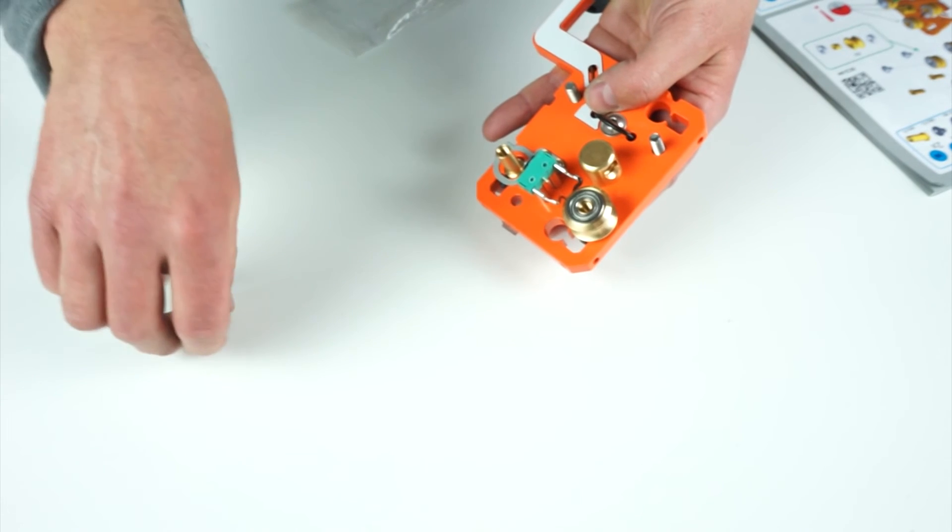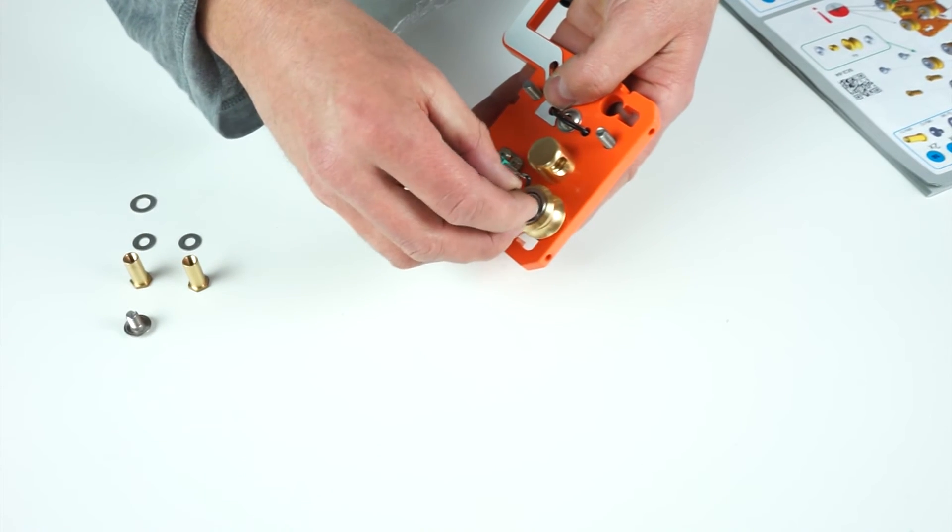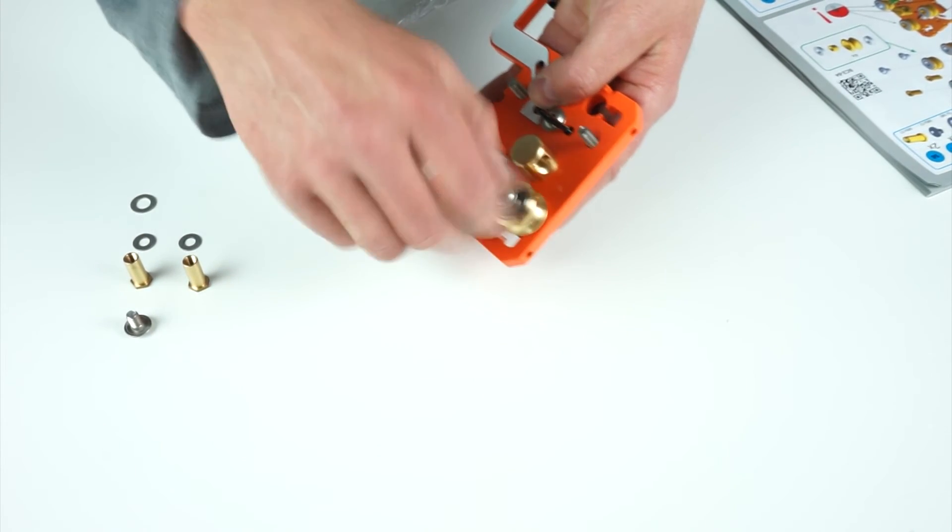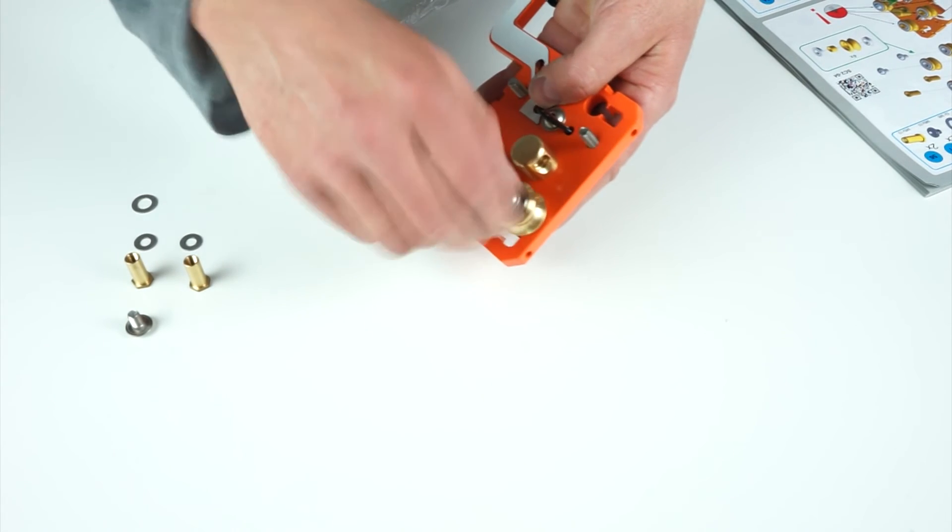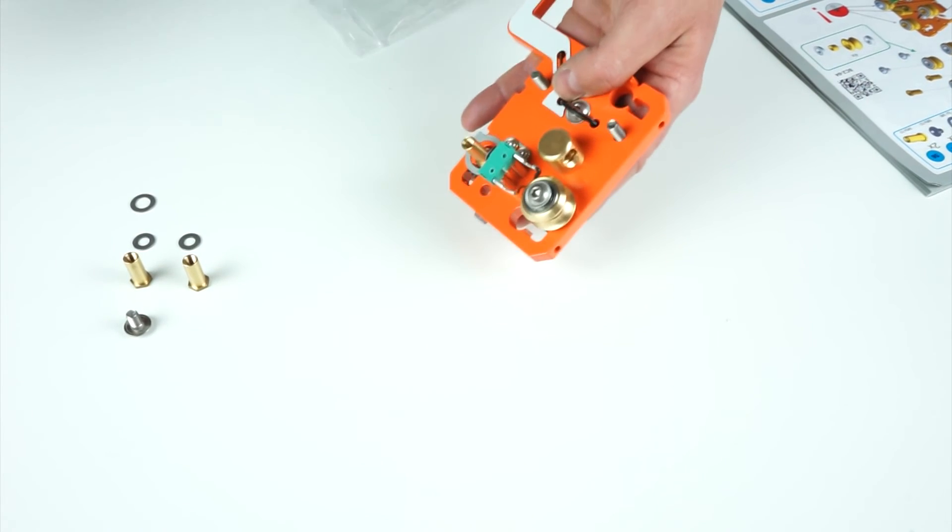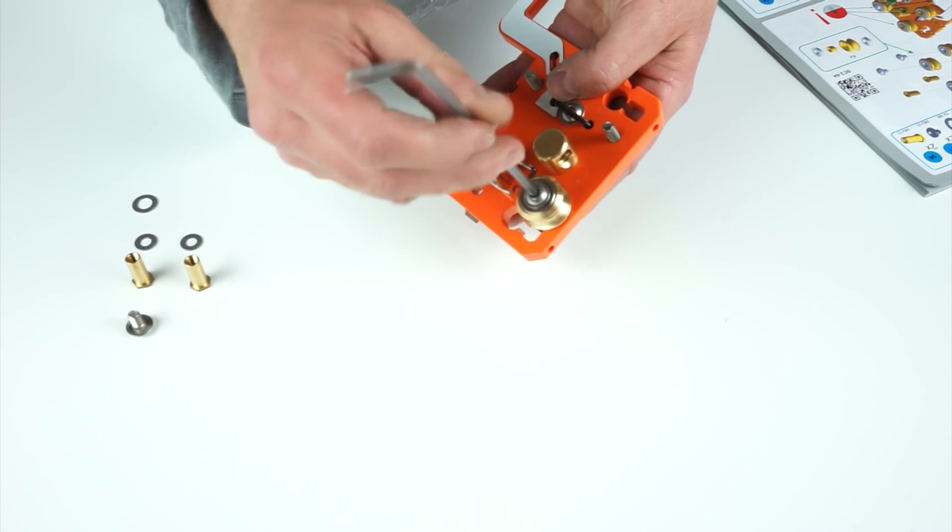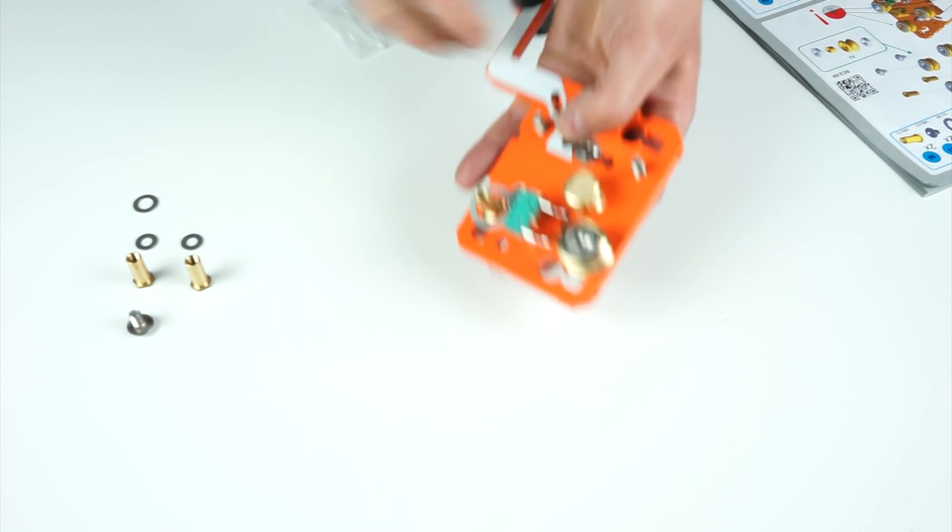The M6 screw is attached last. Be sure to use an L-shaped Allen wrench to firmly tighten this screw by holding the long side of the wrench.